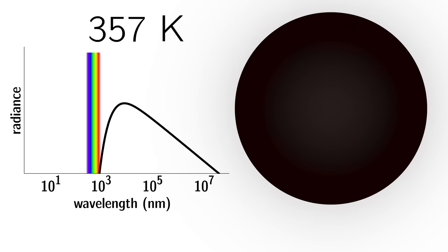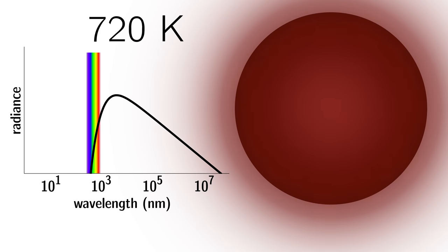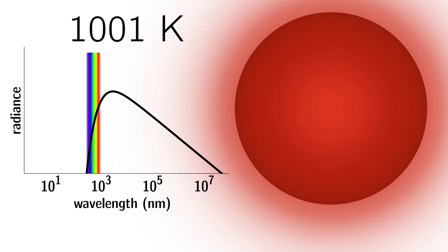But as you start to increase the temperature, the black body's spectrum shifts to shorter wavelengths and the object starts to radiate in the visible part of the spectrum. As the object gets hotter, the relative amount of ultraviolet it radiates becomes larger.